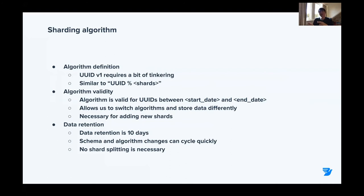The algorithm is basically the UID modulo the number of shards we have. This implicates that if we want to change this algorithm — for instance, if we need to add new shards — the algorithm will be changing. So it's important to have a validity period for each algorithm, defined by a start date and an end date. The end date is optional; if there's no end date, it's infinity — meaning that's the most recent algorithm. This allows us to switch algorithms whenever we want. The start and end dates correspond to the validity of the timestamp embedded within the UID.